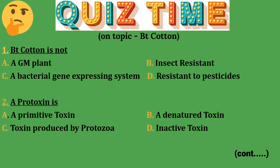Let's have some quiz time and see how much you have grasped. Question 1: Bt cotton is NOT — Option A: a GM plant; Option B: insect resistant; Option C: a bacterial gene expressing system; Option D: resistant to pesticides. The right answer is Option D — resistant to pesticides.